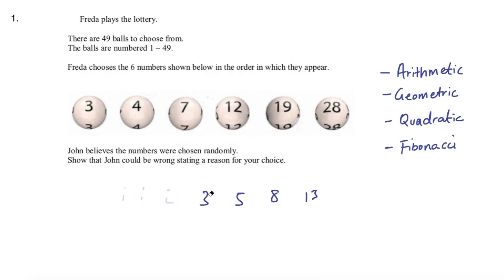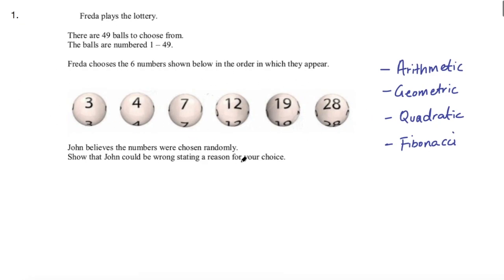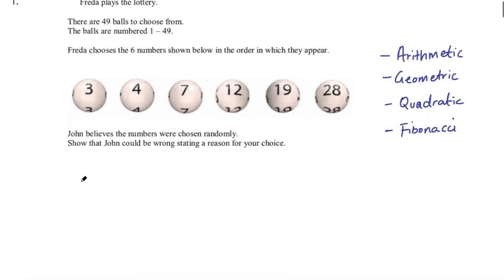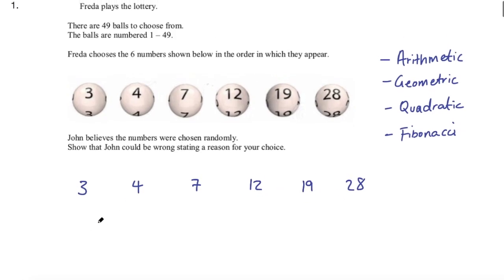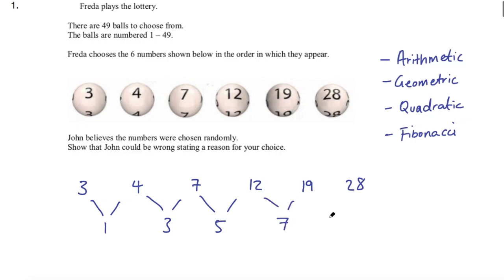So there are different types of sequences and we can examine this pattern of numbers to see which sequence we're looking for. Let's go ahead and write this down: we've got 3, 4, 7, 12, 19, and 28. The first thing we can do is find the difference between each number. 3 to 4 is a difference of 1, 4 to 7 is 3, 7 to 12 is 5, 12 to 19 is 7, and 19 to 28 is 9.